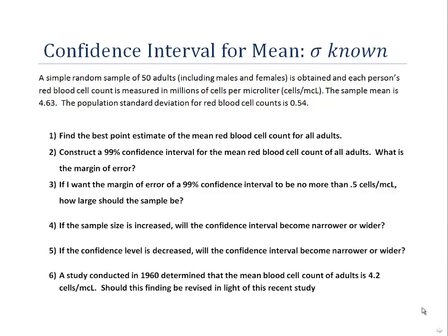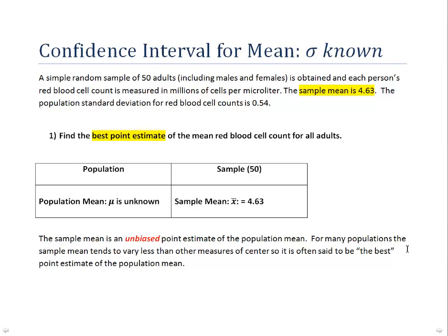We have six different questions and we'll go through them one at a time. The first question is: what's the best point estimate of the mean red blood cell count for adults? The sample mean is 4.63, and the sample mean is a point estimate — it's also an unbiased point estimate. Unbiased simply means that with larger and larger samples, we're guaranteed to get closer to the true population mean. Since mu is unknown and unknowable — too expensive and time-consuming — we take a sample of size 50, calculate x-bar, and that is our best point estimate for mu.